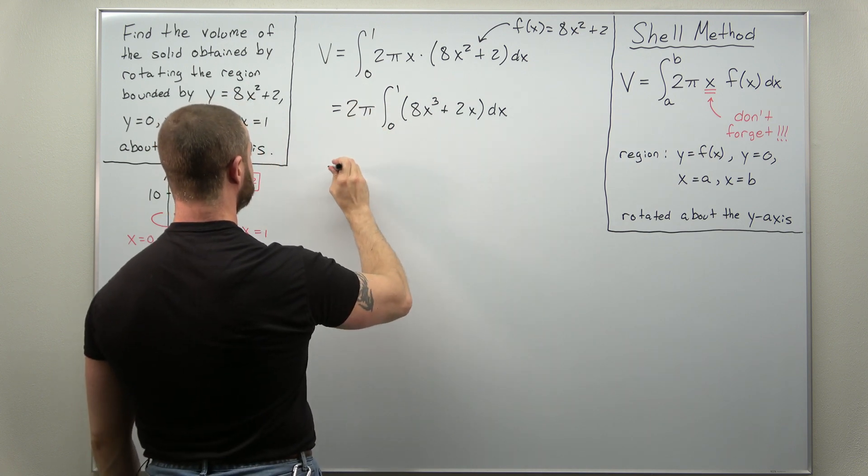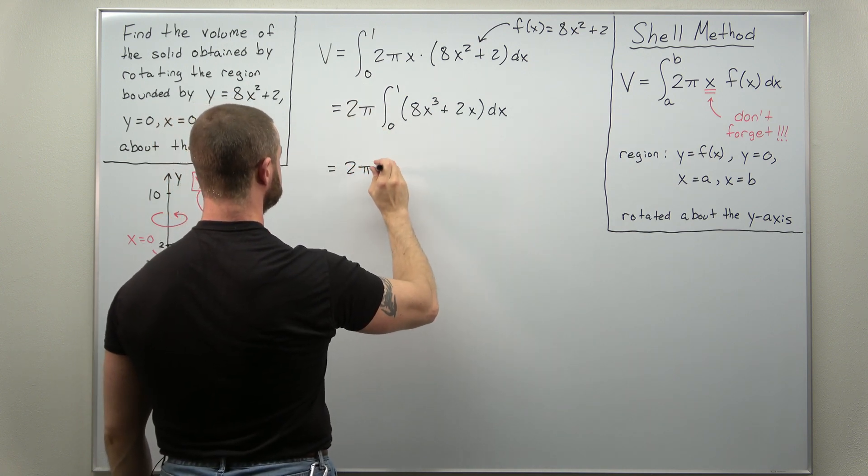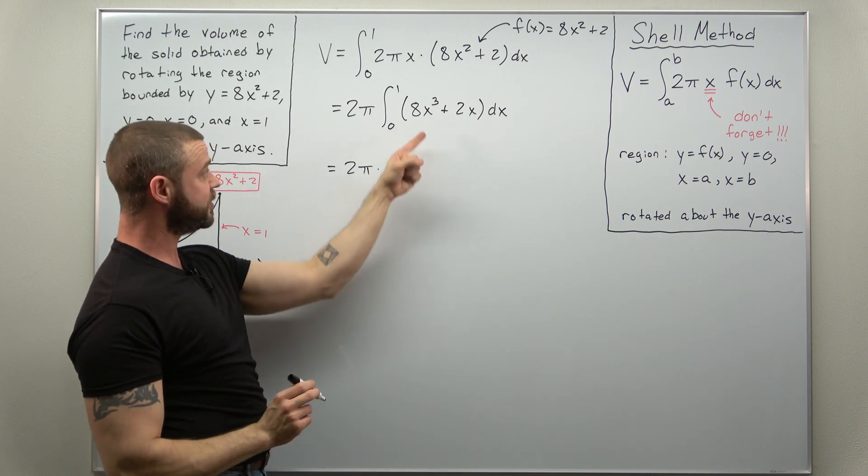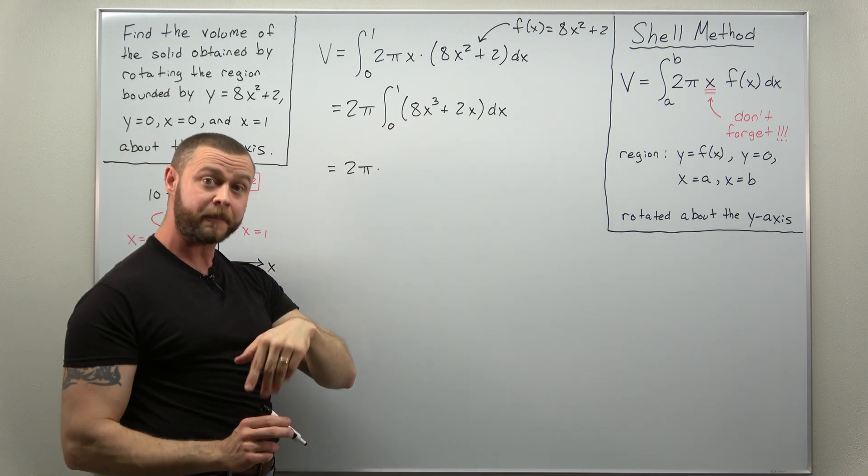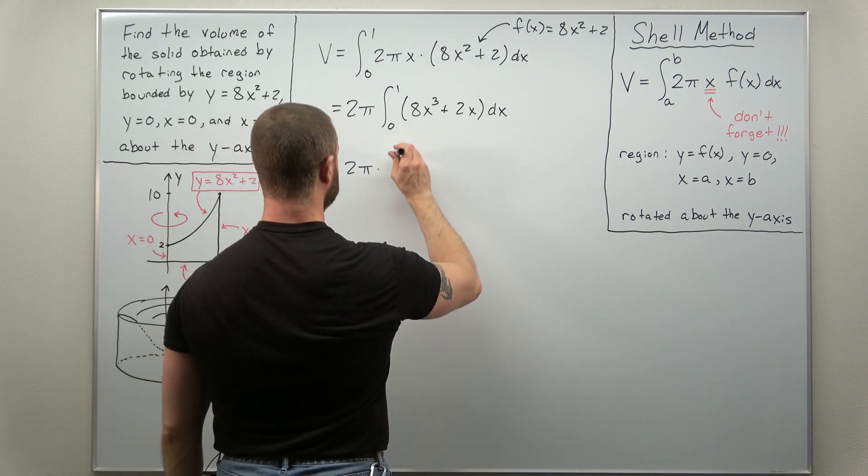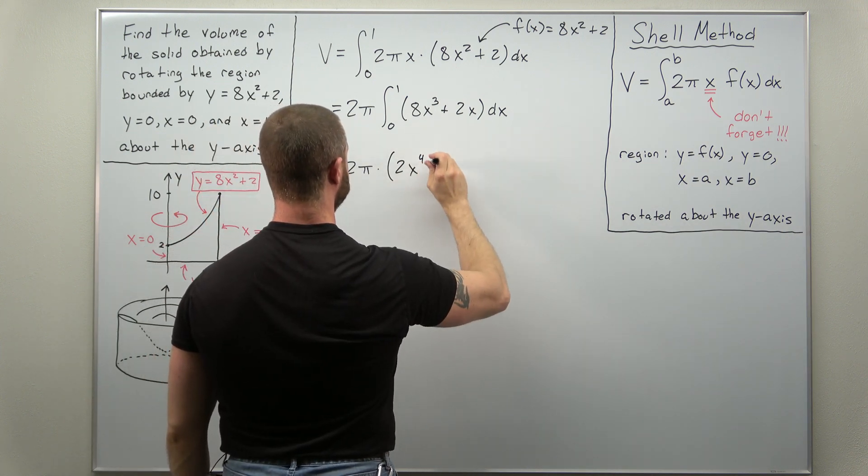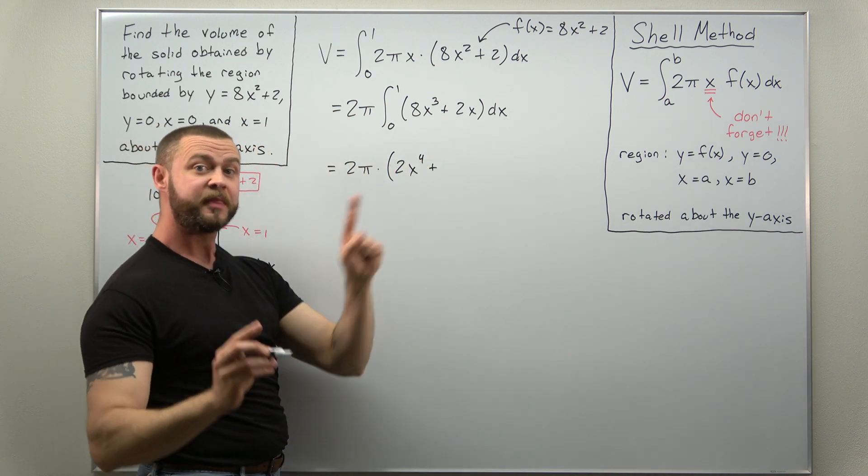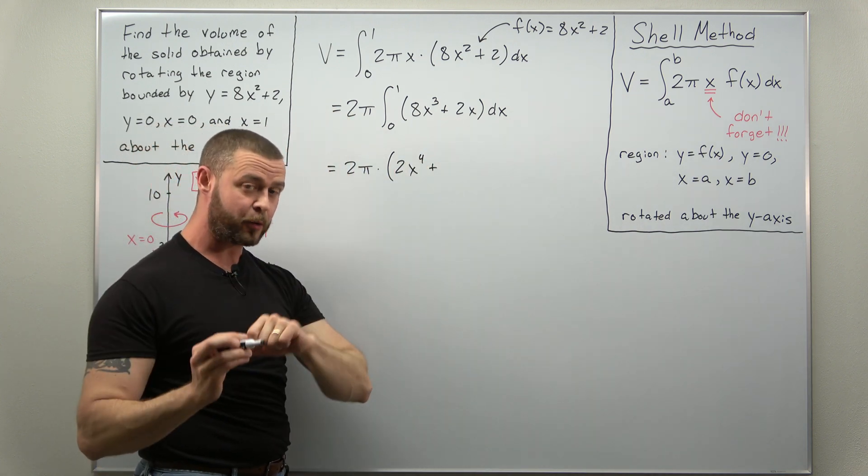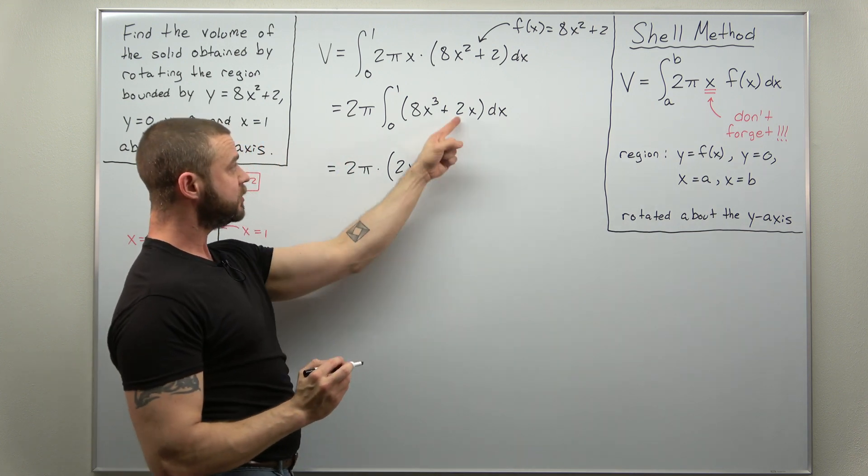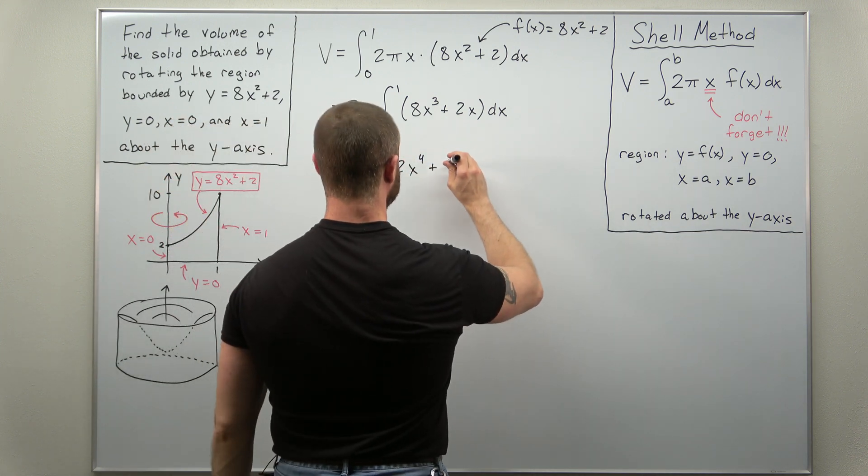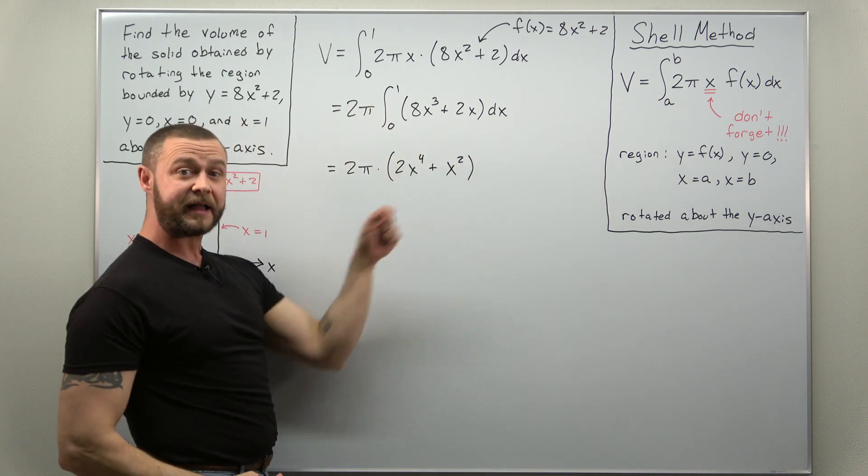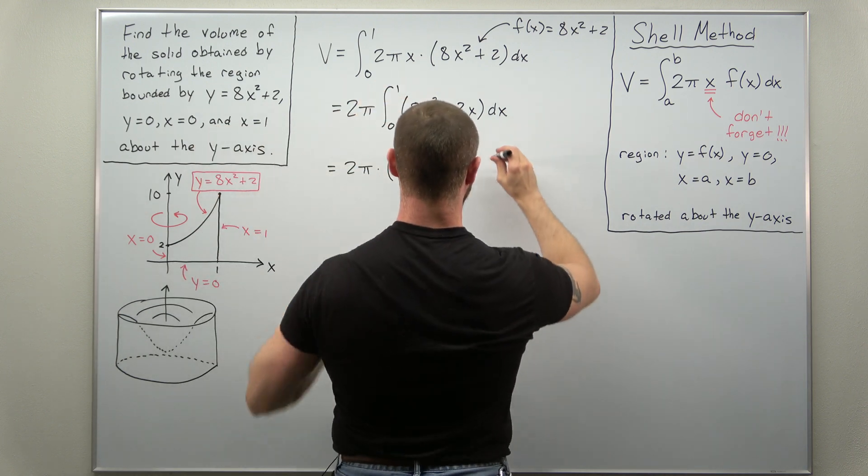Alright and this requires no special integration methods. We can just find antiderivatives by using the power rule. So if we carry down our factor of 2 pi, your antiderivative you're going to get a factor of 1 fourth times x to the 4th. 8 times 1 over 4, that's going to cancel to 2. So you'll get 2x to the 4th. And when you find an antiderivative for 2x, x by itself with the power rule that will integrate to 1 half x squared. 2 and a half will cancel. So you should get your antiderivative here as just plus x squared for that last term. And we're going to evaluate that from 0 to 1.